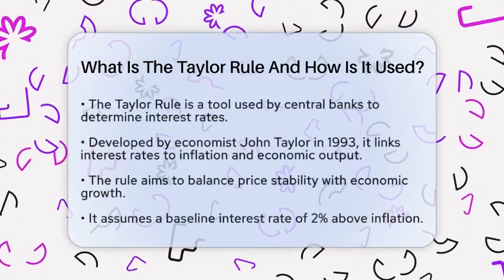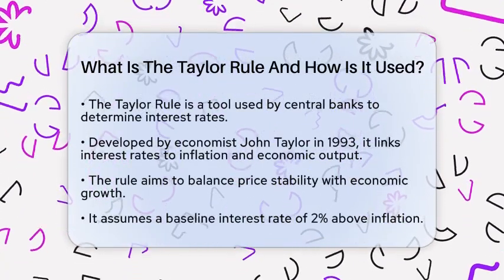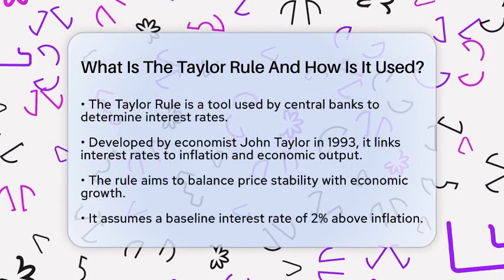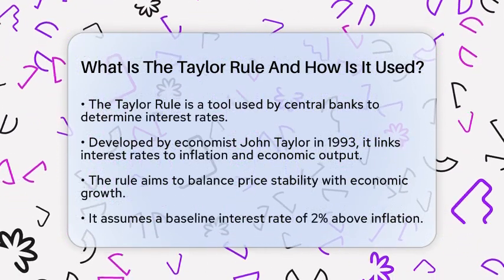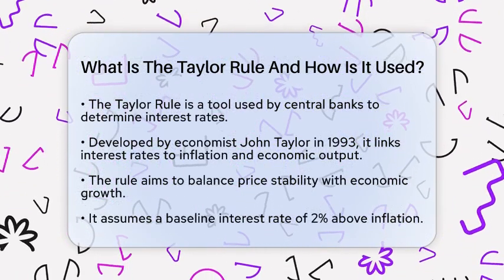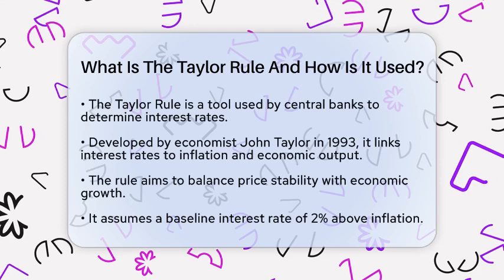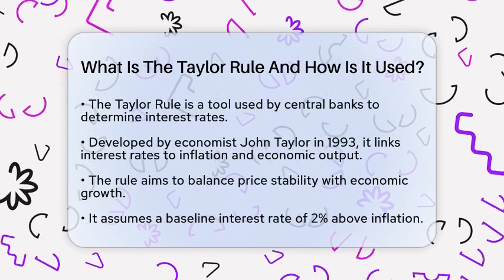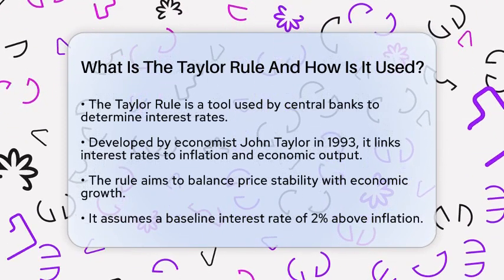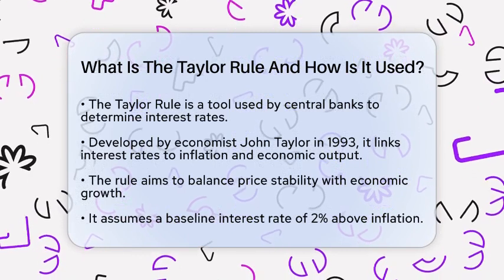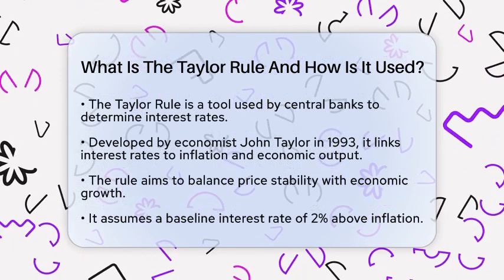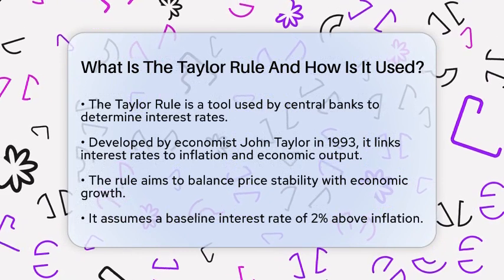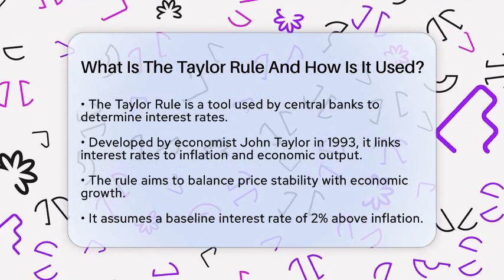Have you ever wondered how central banks decide on interest rates? One important tool they use is called the Taylor Rule. This mathematical formula helps guide interest rate decisions by linking them to inflation and economic output. Developed by economist John Taylor in 1993, the rule aims to balance price stability with economic growth.